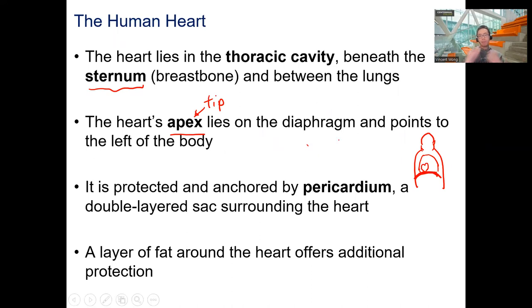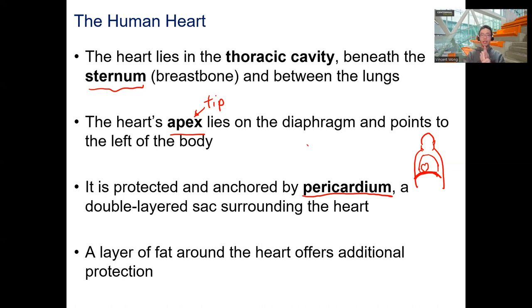To protect and anchor the heart so it doesn't bounce around in the thoracic cavity, it is surrounded by a double-layer membrane called the pericardium. There's also a little bit of fat around the heart — fat serves two purposes: insulating the organ and keeping it warm, and providing cushioning to protect from physical shocks, like bubble wrap around electronics.